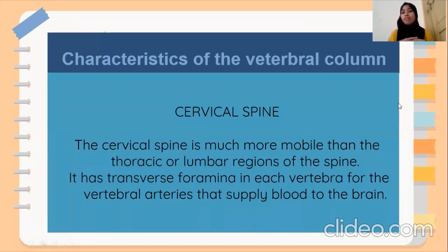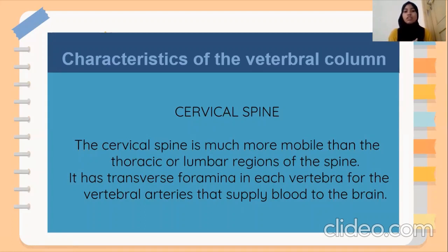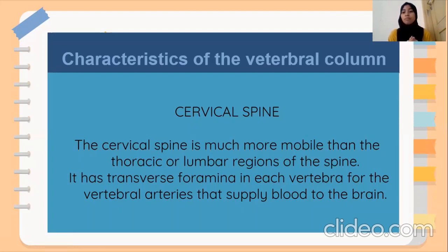This is the characteristic of the vertebral column. The cervical spine is much more mobile than the thoracic or lumbar region of the spine, because it has a transverse foramina in each vertebra, which supplies the blood to the brain.